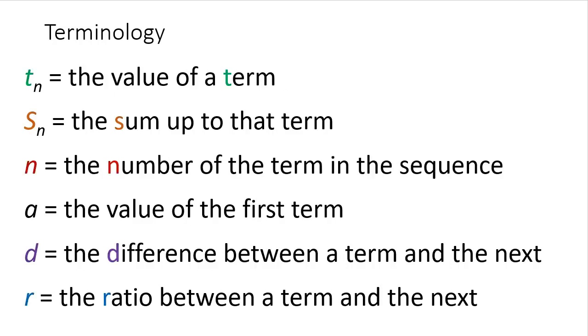The little t is for term, s is for sum, that is when we add things, n along is the number along, a is the value of the first term. Not hard, since a is the first letter of the alphabet, d is for common difference, and r for common ratio, a common multiplication.